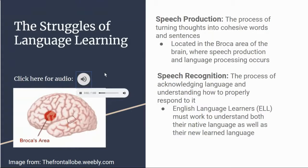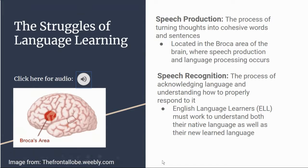There are many obstacles that come with learning a new language. For example, speech production — turning thoughts into speech — is a very complex process that is crucial for effective communication. Located in the Broca area of the brain, speech production helps individuals select, organize, and articulate words. For English language learners, this means that in order to master their new language, they must suppress their instinctive habits from their native language so that they may strengthen their comprehension of English.